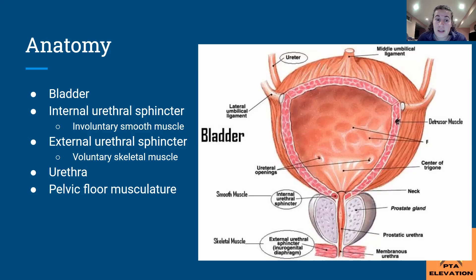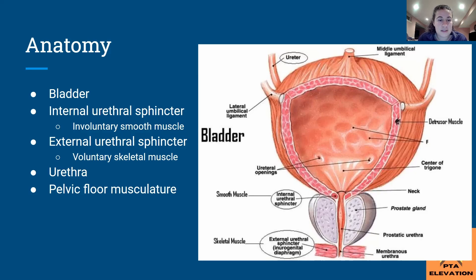The external urethral sphincter, on the other hand, is voluntary skeletal muscle. This is why most of us, if we feel the urge to urinate, we're not urinating on ourselves — because we have control of that external urethral sphincter. The urethra is where urine passes through, and the pelvic floor musculature is associated with the external urethral sphincter. Understanding that this is under voluntary control means that if we have urinary stress incontinence, we can work to control it.